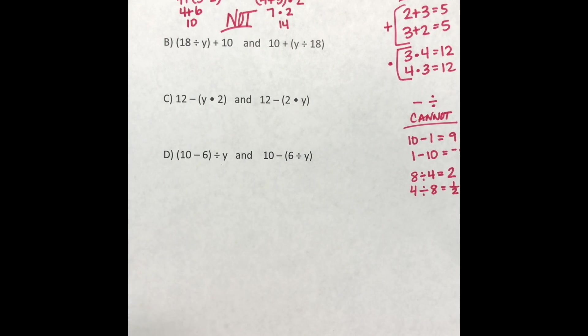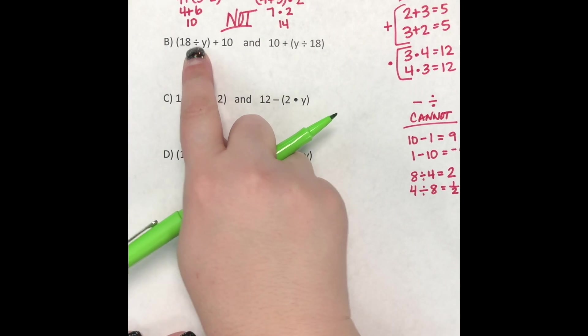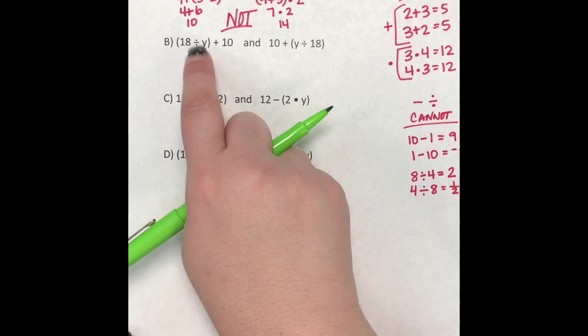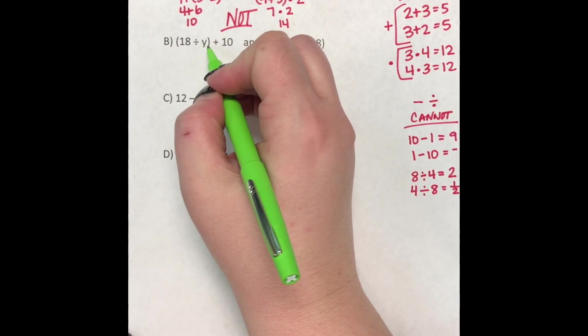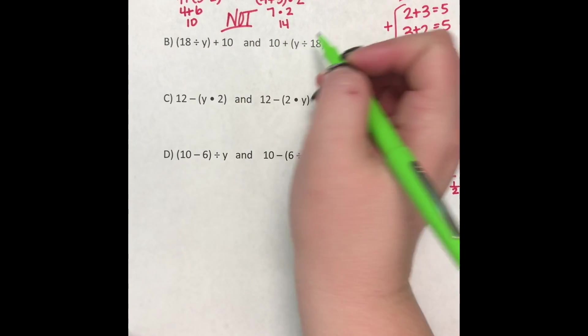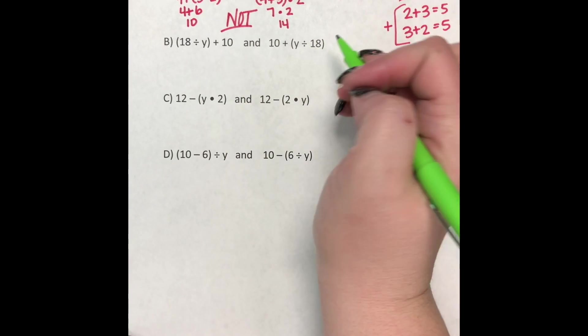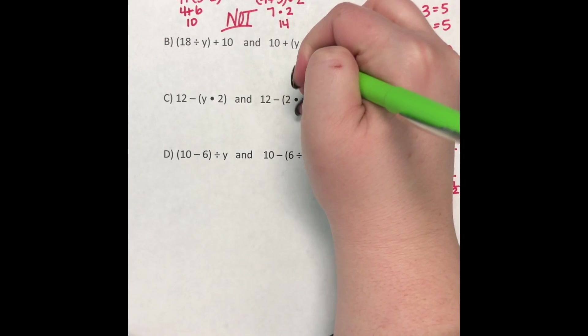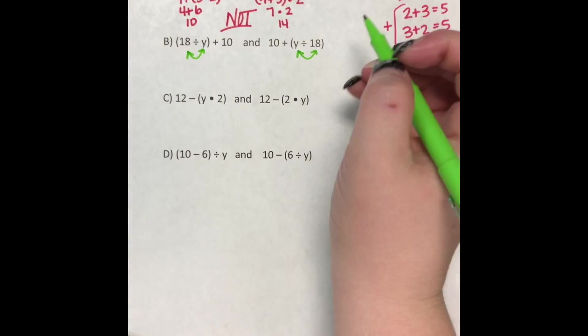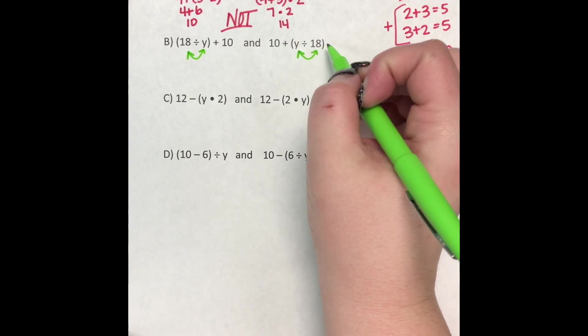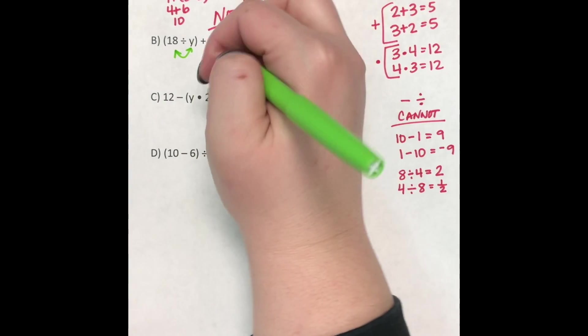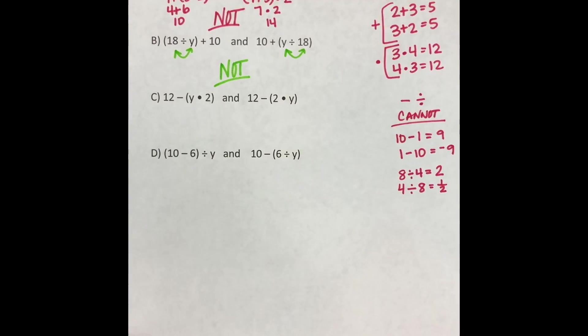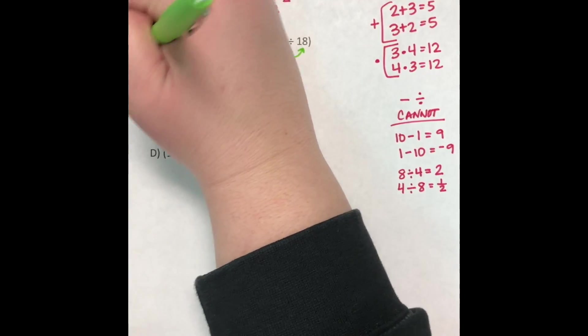So let's try answer B. So looking at answer B, I have division and addition. So I know that with a division, you cannot switch it. You can't flip it. So looking here, I have 18 divided by Y, and then here I have Y divided by 18. Because those are not in the same order, they've been flipped, I know that this is not going to come out equal because they have rearranged the division. And so we cannot rearrange division, and so these will not come out equal. So I don't even have to solve this one to know that it's not going to be a correct answer.